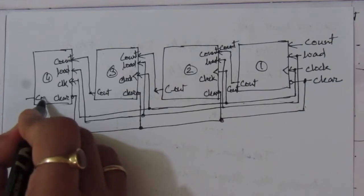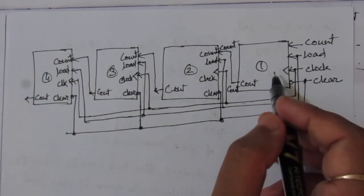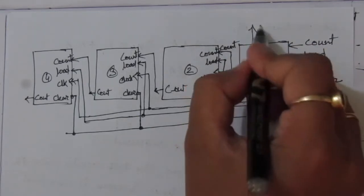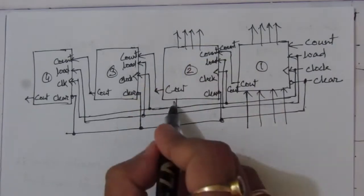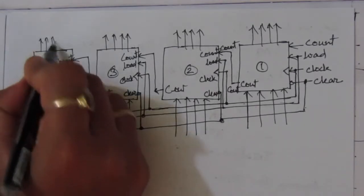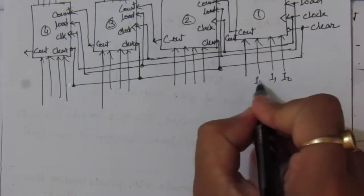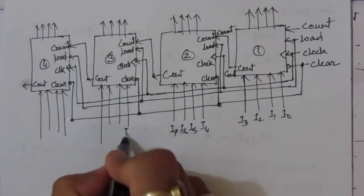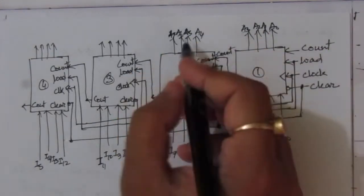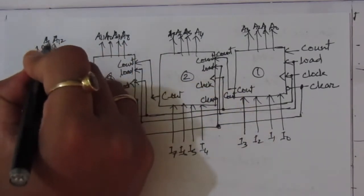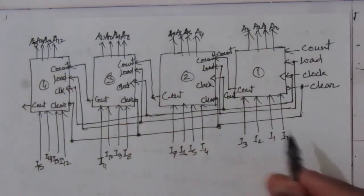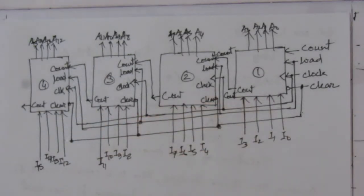For all four counters we have four inputs and four outputs each. Across the four blocks we have inputs I0 through I15 and outputs A0 through A15. That means we have 16-bit input and 16-bit output. So this is the complete 16-bit parallel counter.